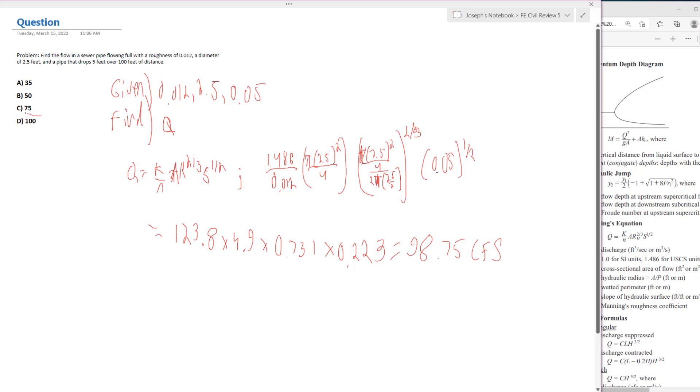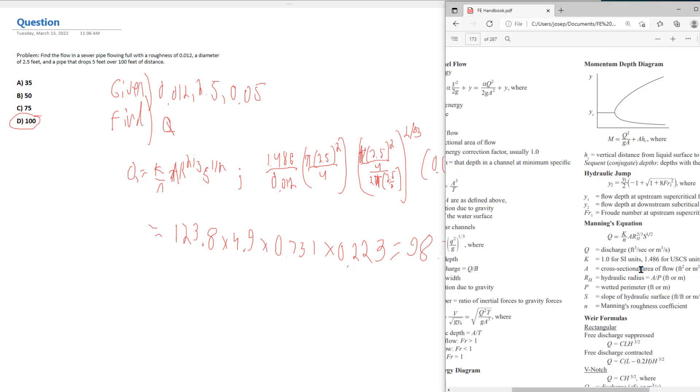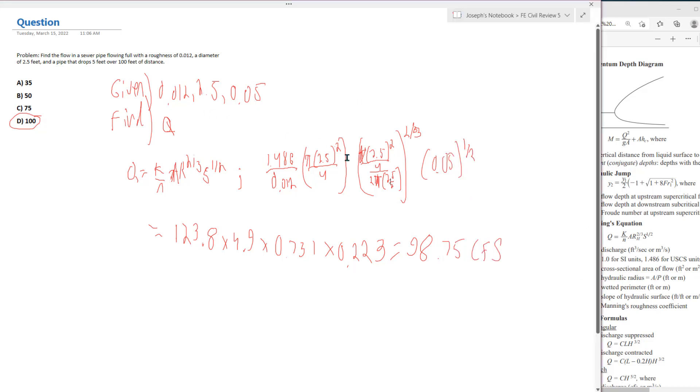So that's what we're going to select as our answer. So let's remember the process here. We found the variables that were given. We found what we needed to find. We looked it up in the FE manual. We used Manning's equation, keeping our units consistent. And then we conducted our calculations carefully. We got 100 CFS as the flow rate in this full flowing sewer pipe.